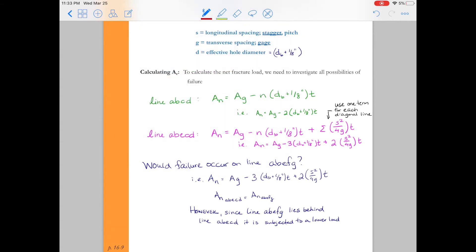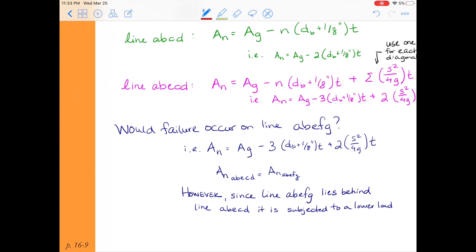So we would say, however, since line A, B, E, F, G lies behind line A, B, E, C, D, it is subjected to a lower load. And how can we make sense of that? Well, let's go ahead and take a look at a free body diagram. To do that, we're going to have to make an assumption. That assumption is going to be that every bolt in the cross section is going to carry the same amount of load. And so I'm going to say here for simple connections, we will assume that the applied load is distributed evenly to all bolts. And when we say simple connections, we're just basically meaning simple connections versus eccentric connections, which we'll learn a little bit more about the difference when we talk about connections.